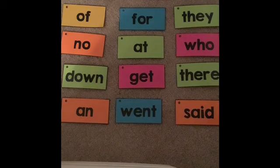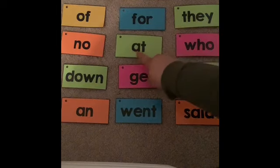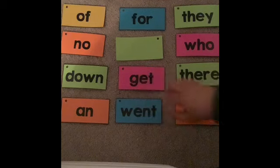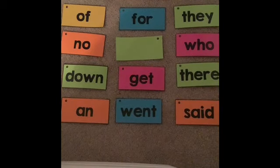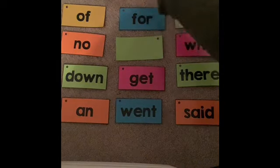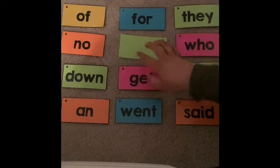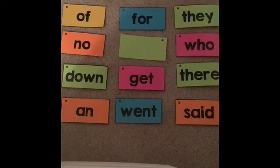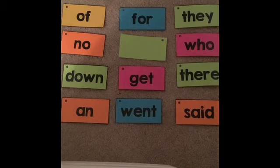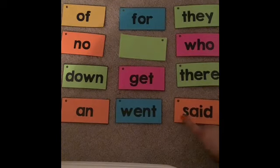First word is: at. A-T spells at. Did you find that one? Next word is: big. Big starts with a B and it's spelled B-I-G. Next word: said. S-A-I-D spells said.